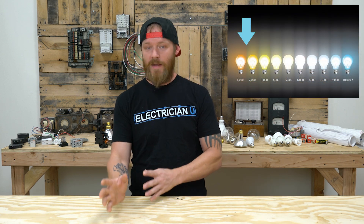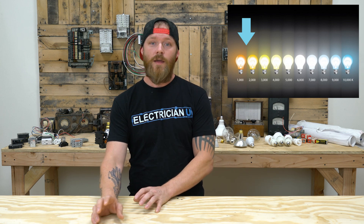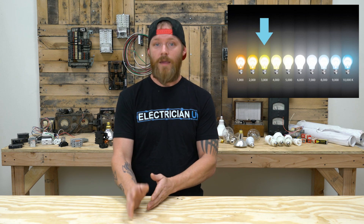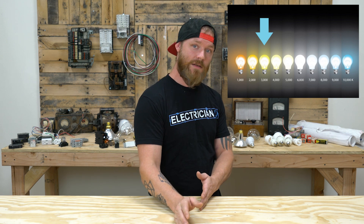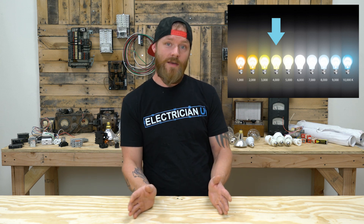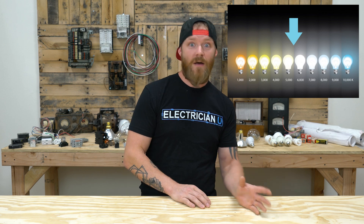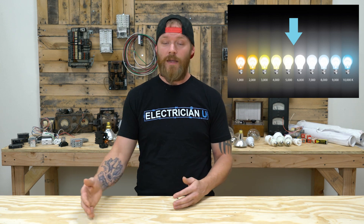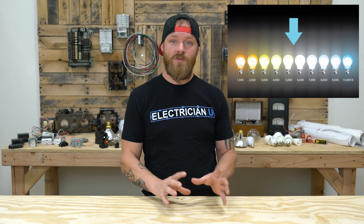On the Kelvin scale, what you're measuring is the color change from red to blue. A match or candle light is probably around 1500 to 2000 Kelvin, giving it a reddish hue. From 2700 to 3500 Kelvin you're looking at more of an orangish to yellow light. From about 3500 to 4500 Kelvin it's more white, maybe still a little yellow. Anything from 5000 to 6500 and up gives you an ultra white with a little bit of blue hue.